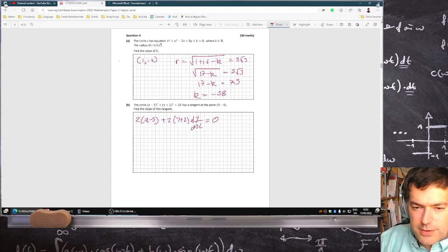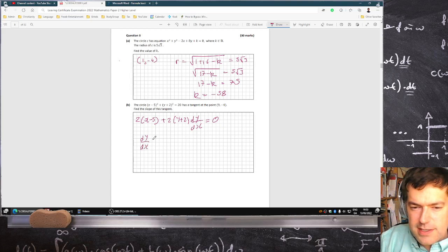Bring down the power, reduce the power by 1. Okay, so if I rearrange this, you can get dy/dx equals minus x minus 5 over y plus 2.